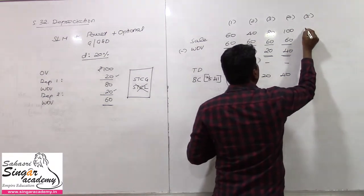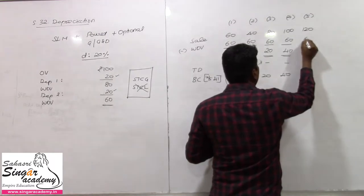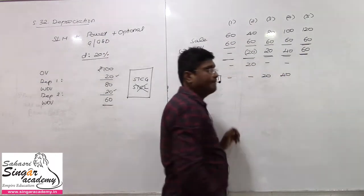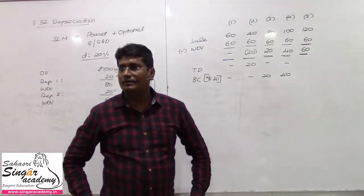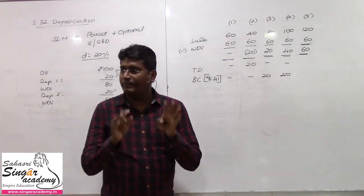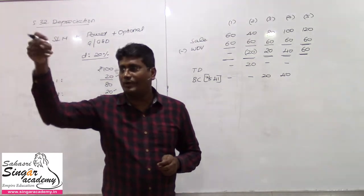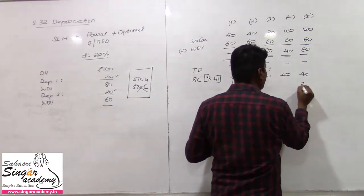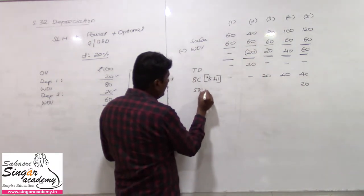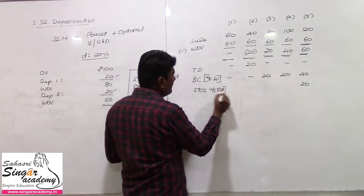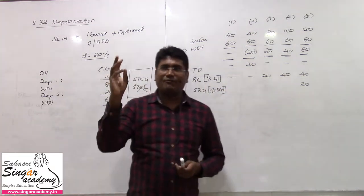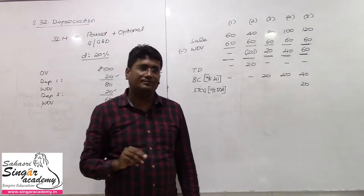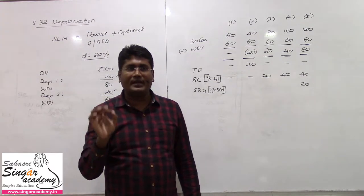Situation number 5: sale value 120, WDV value 60. Gain of 40 rupees, excess amount 60. So this gives us both balancing charge and short-term capital gain. If you have balancing charge and short-term capital gain together — balancing charge of 40, and that is short-term capital gain under Section 50.